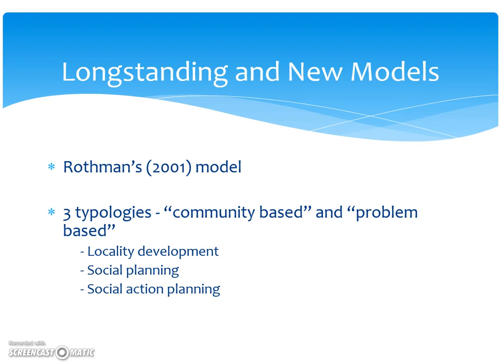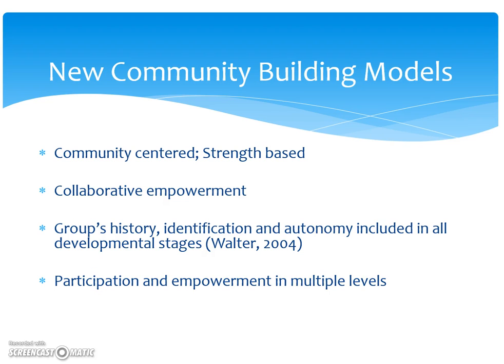There are some longstanding and new models. Rothman's 2001 model is known as the model for community health. There are three typologies considered community-based and problem-based: locality development, social planning, and social action planning. New community-building models include a community-centered, strength-based model built on the community's strengths, and collaborative empowerment — empowerment by people coming together for a cause. Group history, identification, and autonomy are included across different developmental stages.